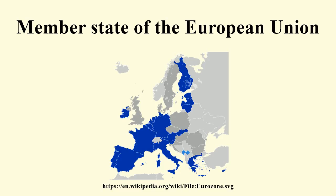The member states have limited their sovereign rights and have thus created a body of law which binds both their nationals and themselves. The transfer by the states from their domestic legal system to the community legal system of the rights and obligations arising under the treaty carries with it a permanent limitation of their sovereign rights. — European Court of Justice, 1964, in reference to the case of Costa v ENEL. Yet, as sovereignty still originates from the national level, it may be withdrawn by a member state who wishes to leave. Hence, if a law is agreed that is not to the liking of a state, it may withdraw from the EU to avoid it.